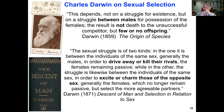We can think about sexual selection as differential reproductive success caused by competition for mates — usually a struggle among males for access to females, but not always. This includes intrasexual selection, where males compete with each other through male-male combat or sperm competition, and intersexual selection, or female choice, which operates between the sexes through choosing mates or even sperm choice.